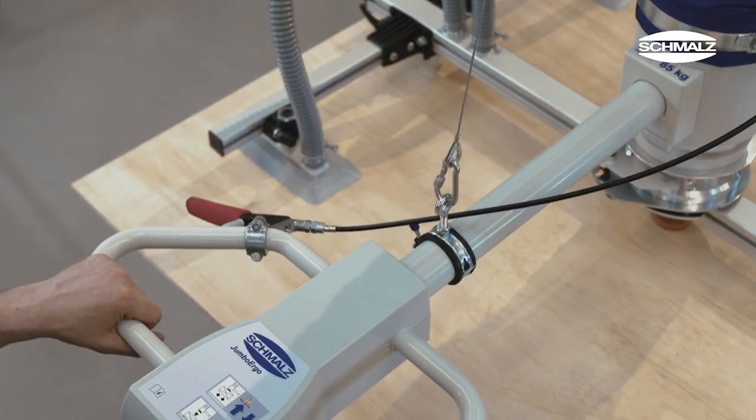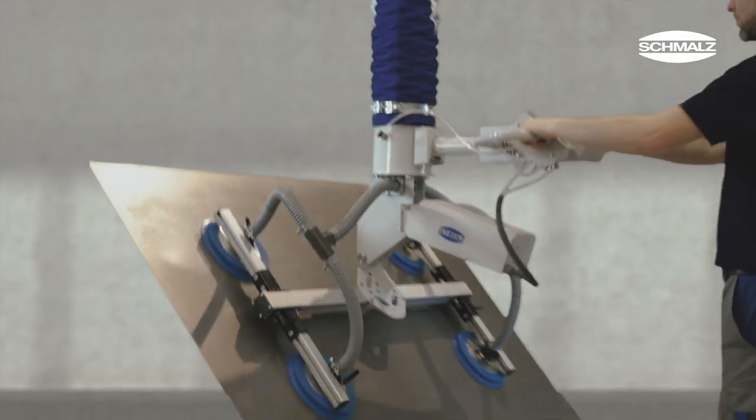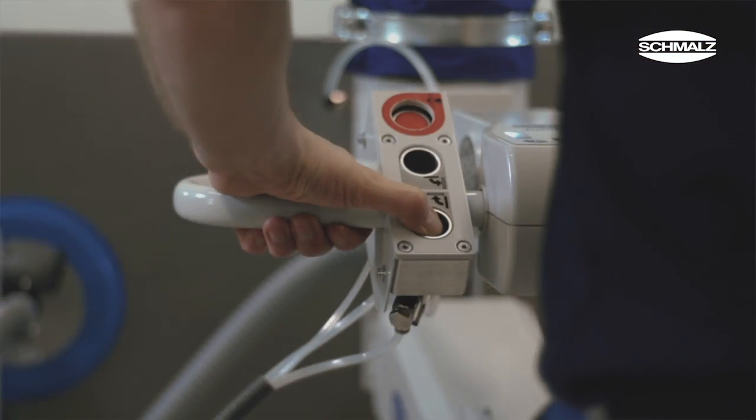The Jumbo Ergo can optionally be equipped with a pneumatically powered 90 degree tilt function. It permits the safe swiveling of loads up to 120 kilograms.